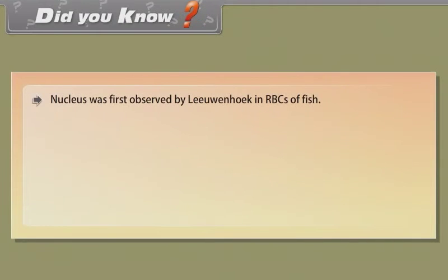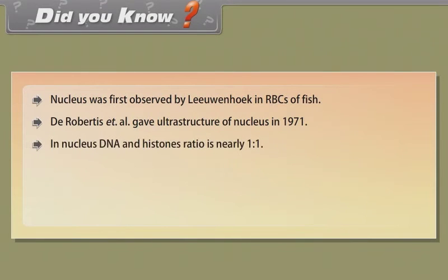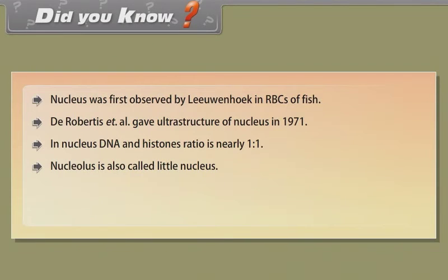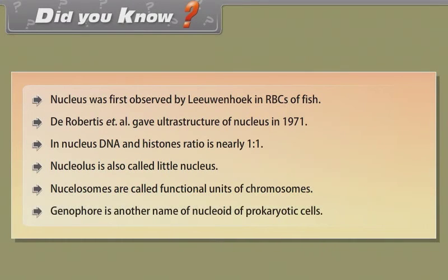Did you know? Nucleus was first observed by Leeuwenhoek in RBCs of fish. De Robertis et al. gave the ultrastructure of the nucleus in 1971. In the nucleus, the DNA to histones ratio is nearly 1:1. Nucleolus is also called the little nucleus. Nucleosomes are called the functional units of chromosomes. Genophore is another name for the nucleoid of prokaryotic cells.